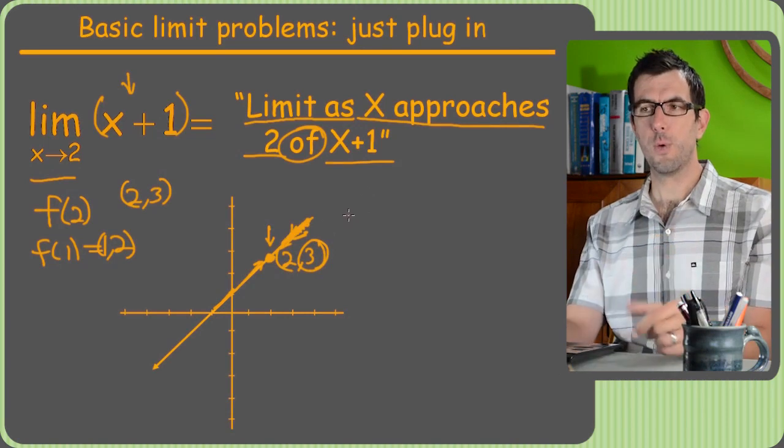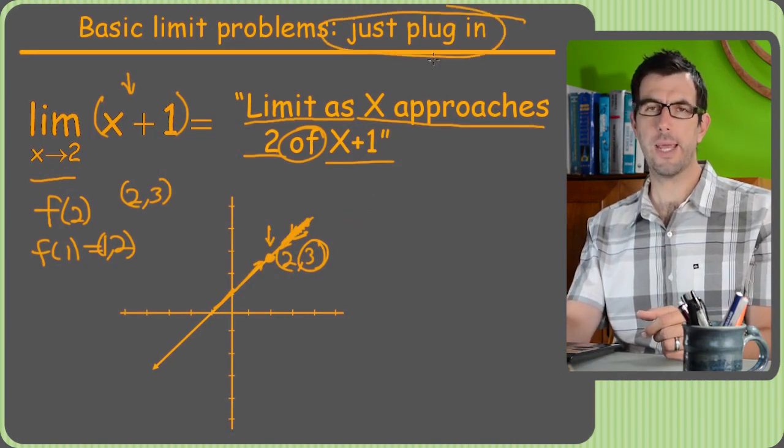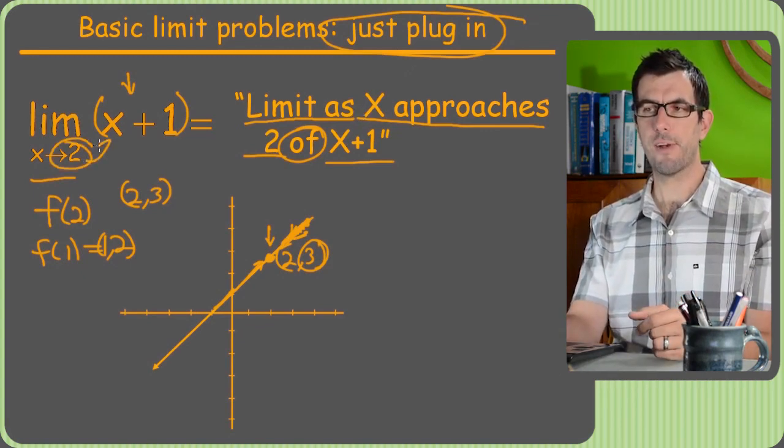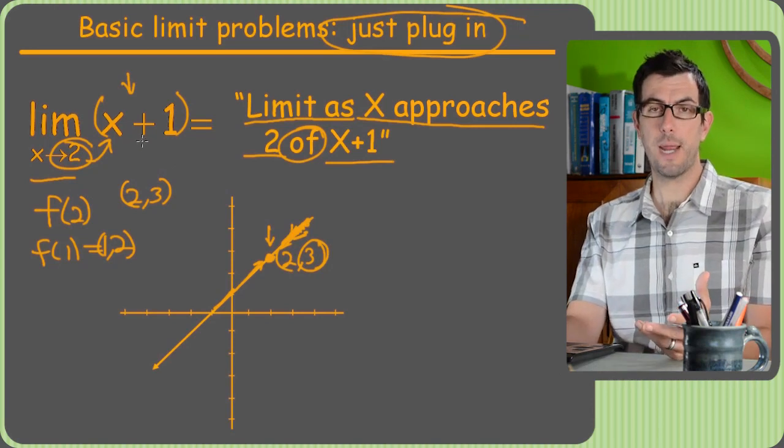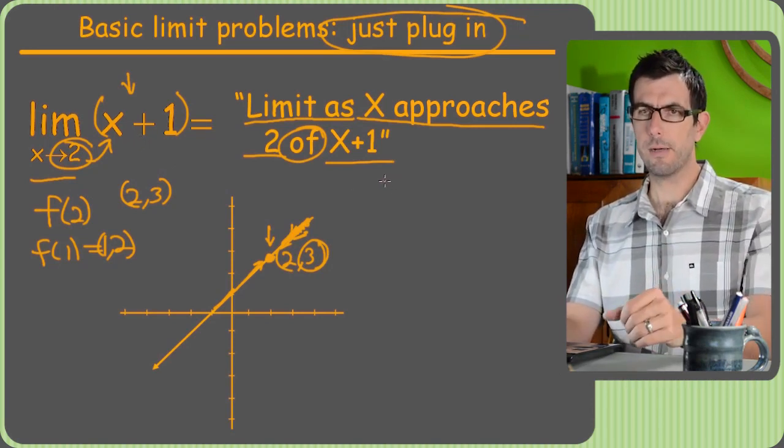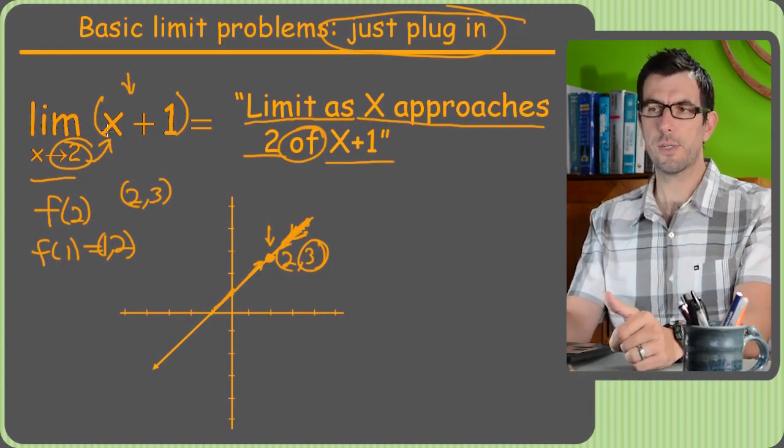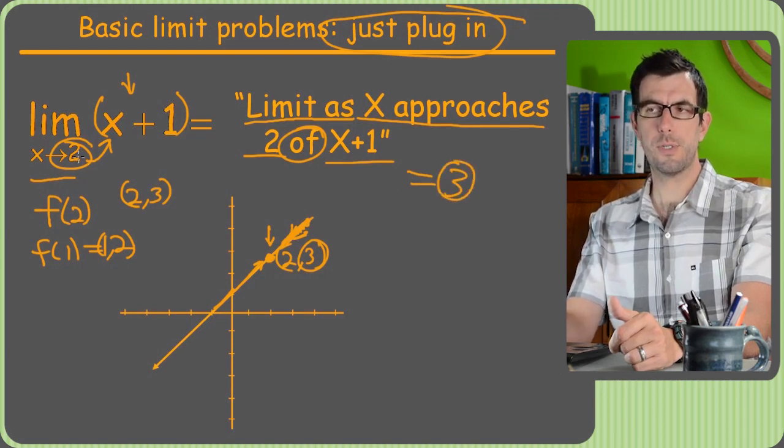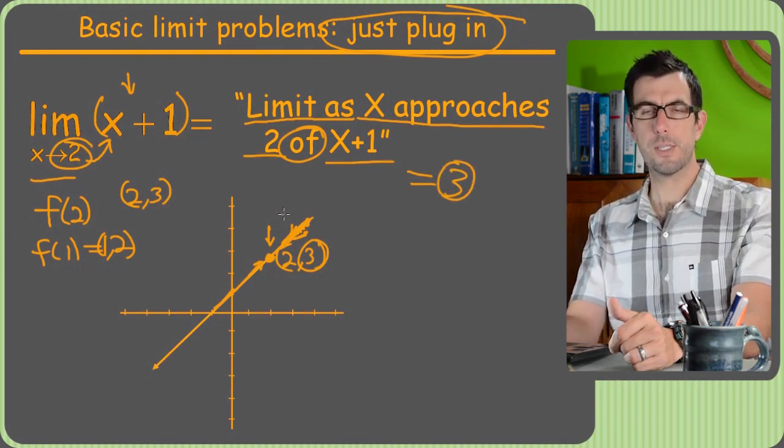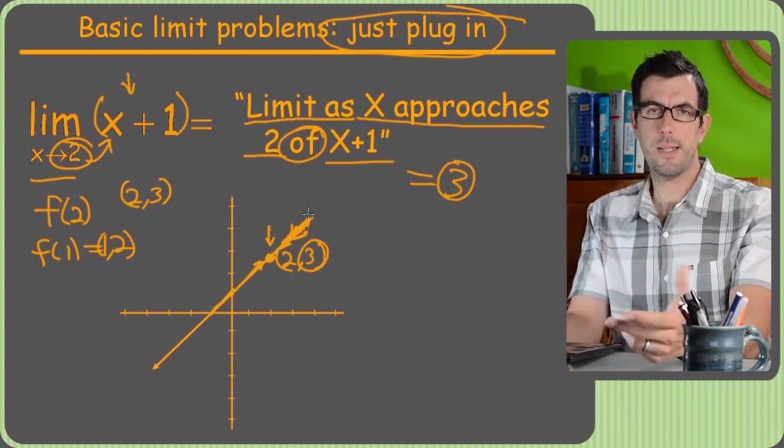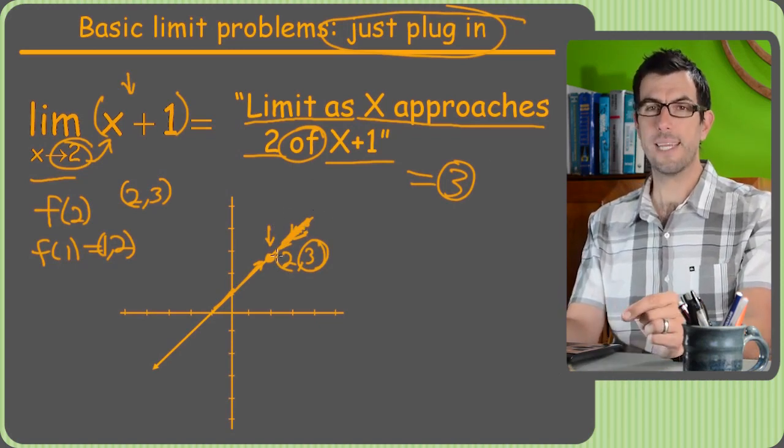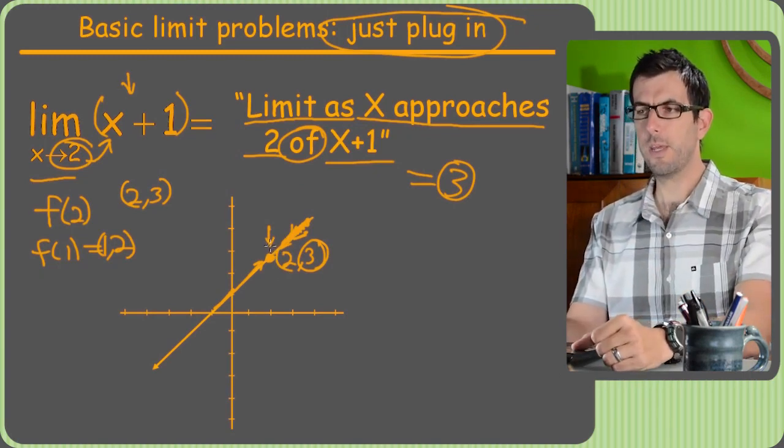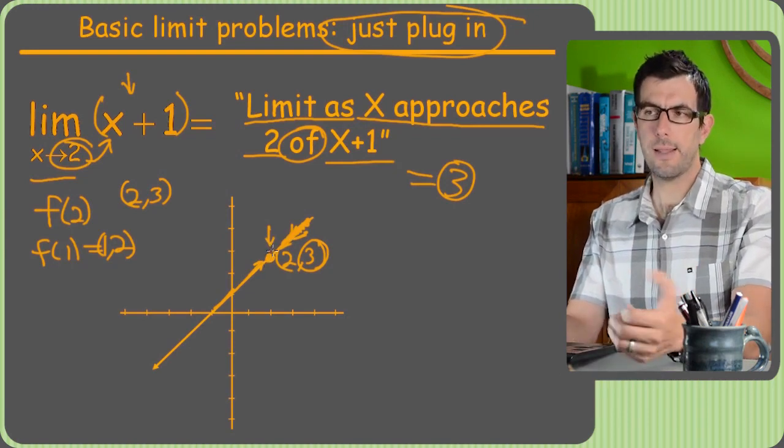And for a basic problem like this, we can actually just plug in. So that's why I wrote, hey, we can just plug in at the top, because that's the first thing you should always try in limit problems. Just take whatever number they gave you here and plug it in for X, and that'll probably be the right answer if you don't get something weird. But if you just get a number, it's right. So if we took 2 and plugged it in here, we get 2 plus 1 is 3. And sure enough, the answer to this problem is 3.